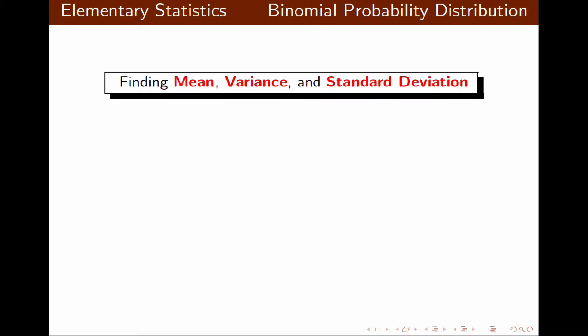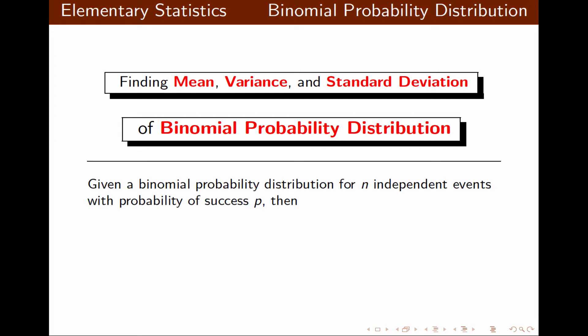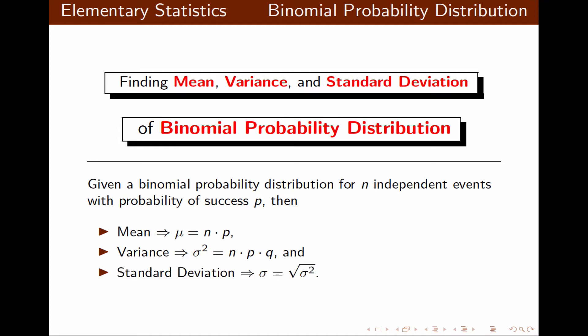So how do we find mean, variance, and standard deviation of binomial probability distribution? Given a binomial probability distribution for n independent events with the probability of success P on each event: the mean is mu with formula n times P; variance is sigma squared with formula n times P times Q; and standard deviation is sigma, which is always the square root of the variance.